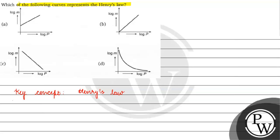Henry's Law states that at constant temperature, the solubility of a gas over a liquid is directly proportional to the partial pressure of the gas over the liquid.